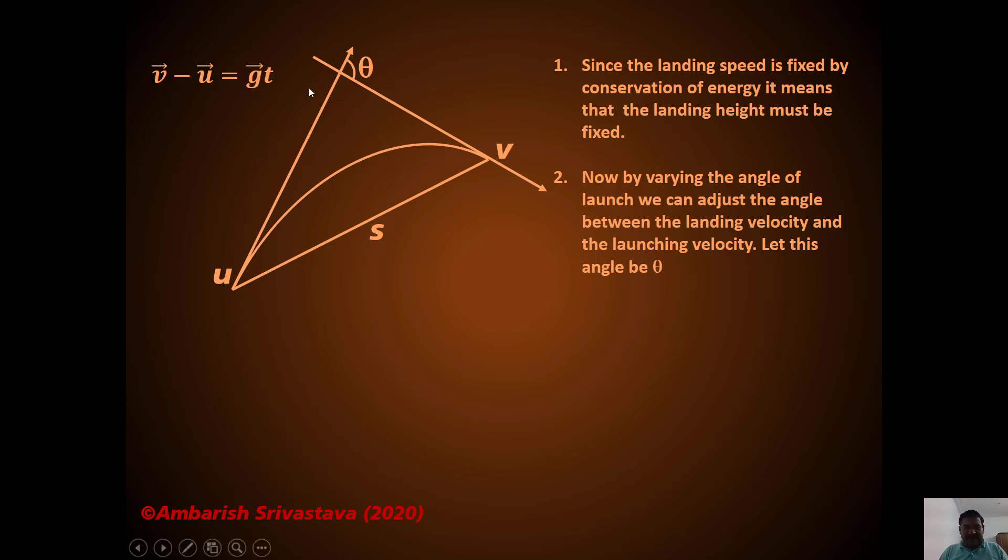So how are we going to use this fact? So let's start writing the equations. So first equation we can write is V⃗ - U⃗ = g⃗t. This is simply V = U + at, and G I am taking as G vector. Now what else can we write? You know that total displacement is the average velocity times the time of flight. So let's say small t is the time of flight, then S⃗ can be written as (U⃗ + V⃗)/2 × t.